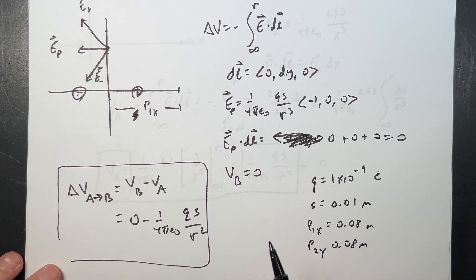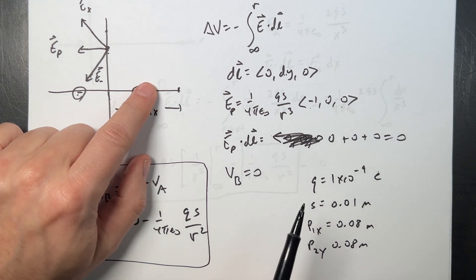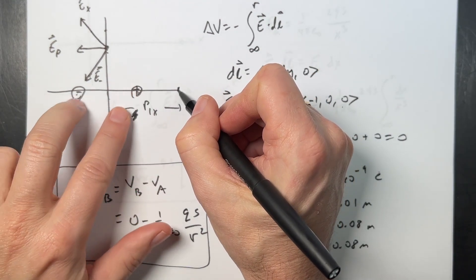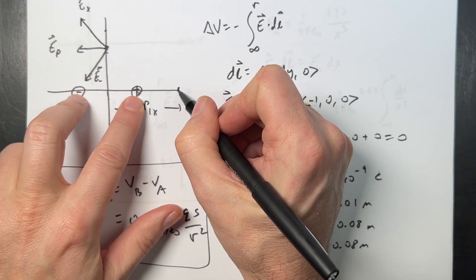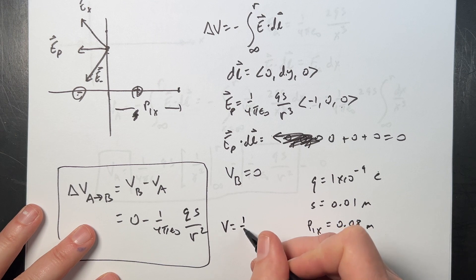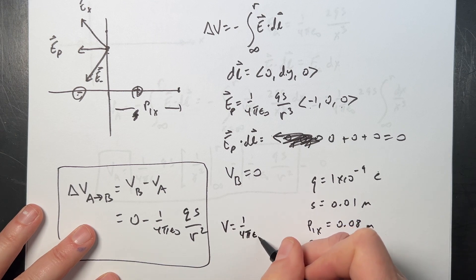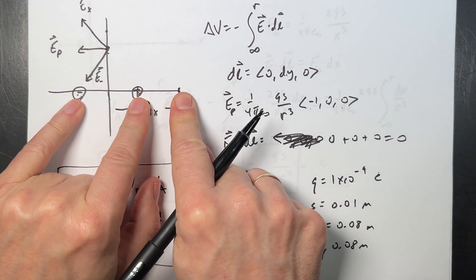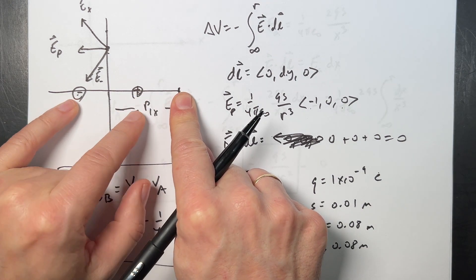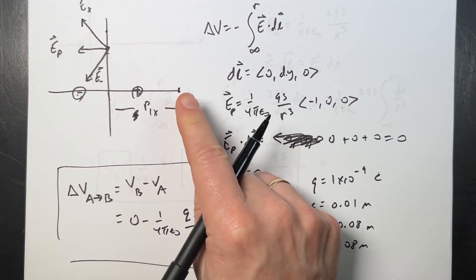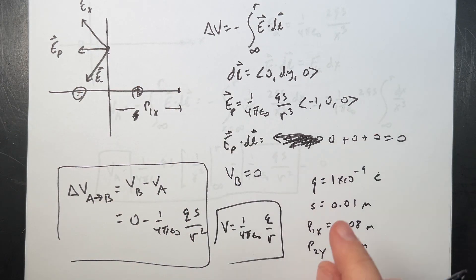There's another way to do this — you could find the potential at any point using the superposition of potentials from individual point charges, since a point charge has potential (1/4πε₀)(Q/R). But I kind of like the integration method better.